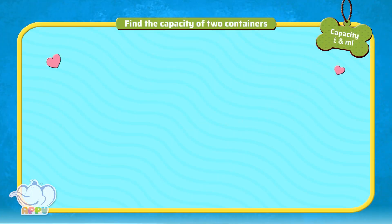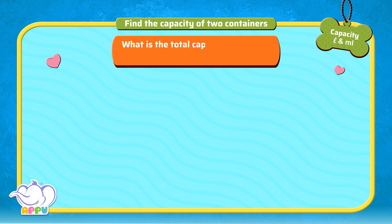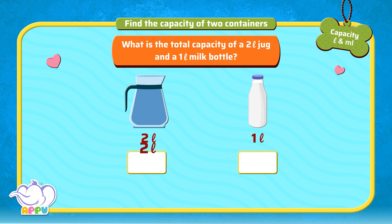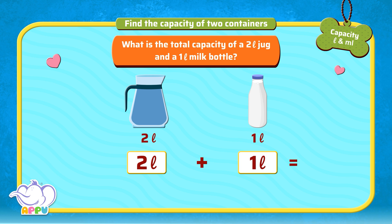Find the capacity of two containers. What is the total capacity of a 2 litre jug and a 1 litre milk bottle? To find the total capacity of a 2 litre jug and a 1 litre milk bottle, we add each of their capacities. 2 litres plus 1 litre is equal to 3 litres. So the total capacity is 3 litres.